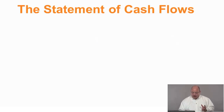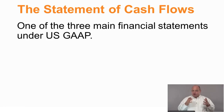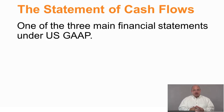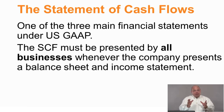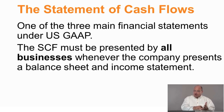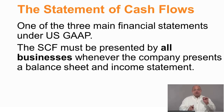The statement of cash flows is one of the three main financial statements under U.S. GAAP. We have the balance sheet, the income statement, and the statement of cash flows. It needs to be presented by all businesses — profit, non-profit, public, private — whenever the company presents a balance sheet and an income statement. You can't have just two; if you have the balance sheet and income statement, you need the statement of cash flows as well, prepared for every year the income statement is prepared.